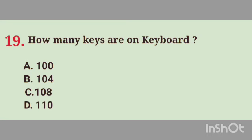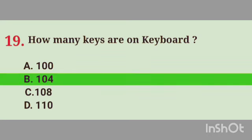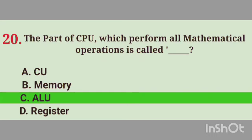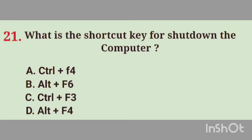Question No. 19. How many keys are on a keyboard? Right answer, Option B. 104. Question No. 20. The part of CPU which performs all mathematical operations is called dash. Right answer, Option C. Arithmetic Logical Unit, ALU.